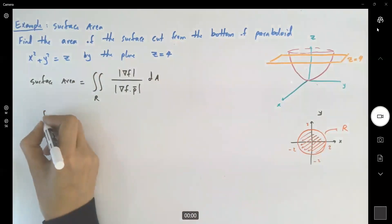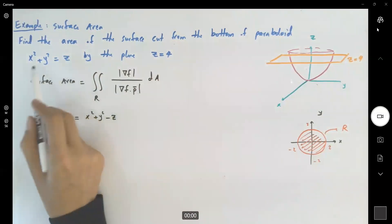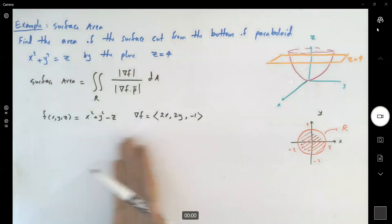So step by step, we're going to calculate each one of these. First of all, f of x, y, and z is given to us as x squared plus y squared minus z. So the gradient of f is equal to 2x, 2y, and negative 1. Obviously, we can calculate the magnitude, which is equal to the square root of 4x squared plus 4y squared plus 1.